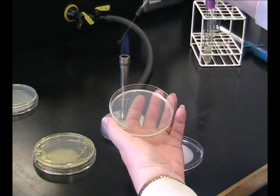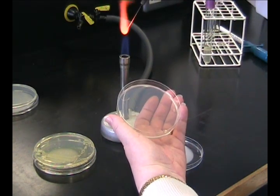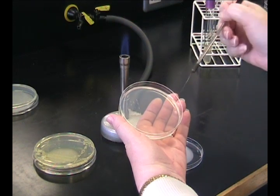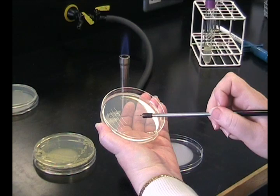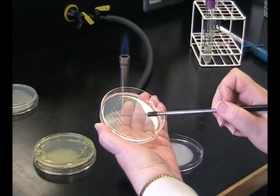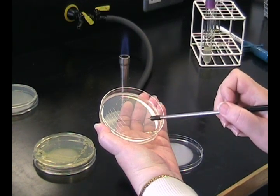It's important now to flame your loop again as before. Cool your loop and repeat this process, taking one streak from each of the four across your agar plate.